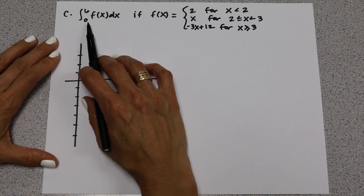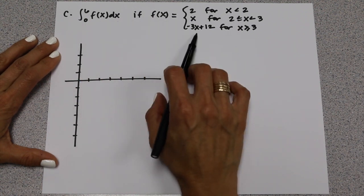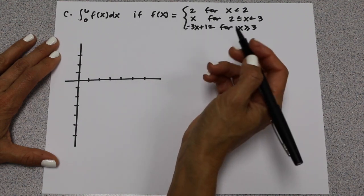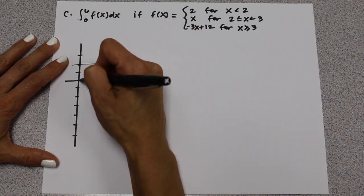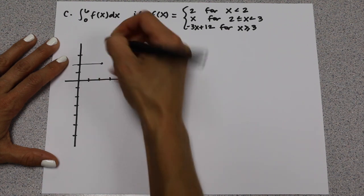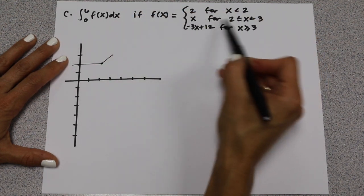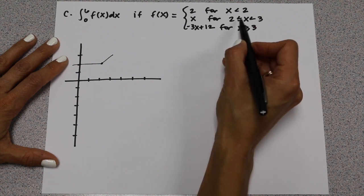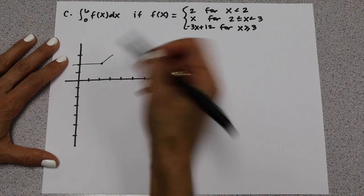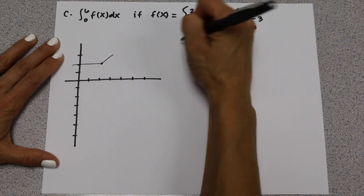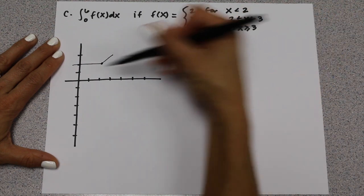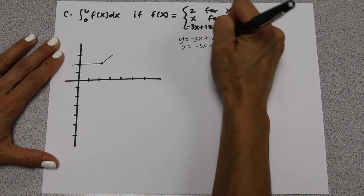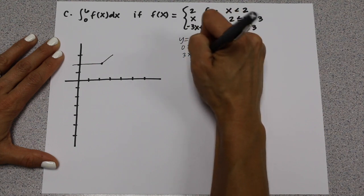In this problem, we have the integral from 0 to 6 of f dx, where f(x) is defined as a piecewise function. y equals a constant height of 2 for all values less than 2. Then y equals x between 2 and 3, which is just a line through the origin with slope 1. Then y equals negative 3x plus 12. To find where that hits the x-axis, plug in 0 for y to get 3x equals 12, so x equals 4.